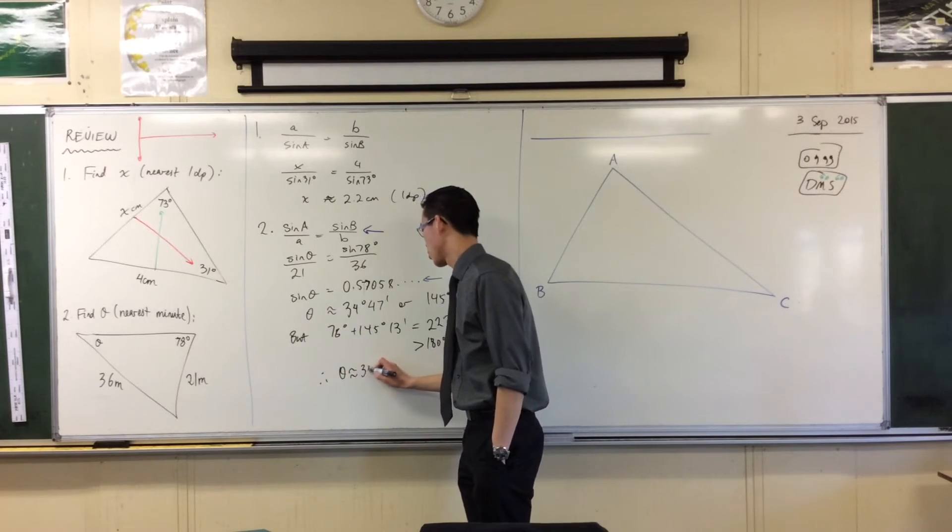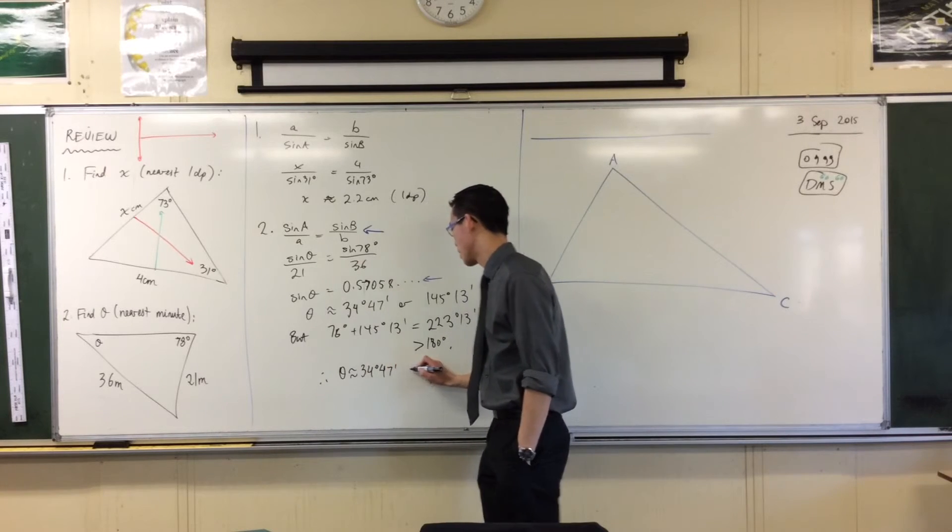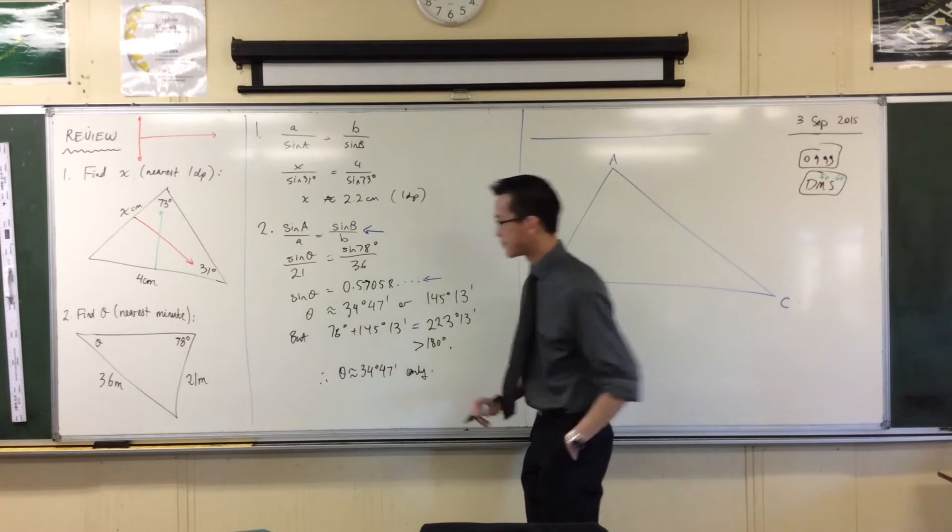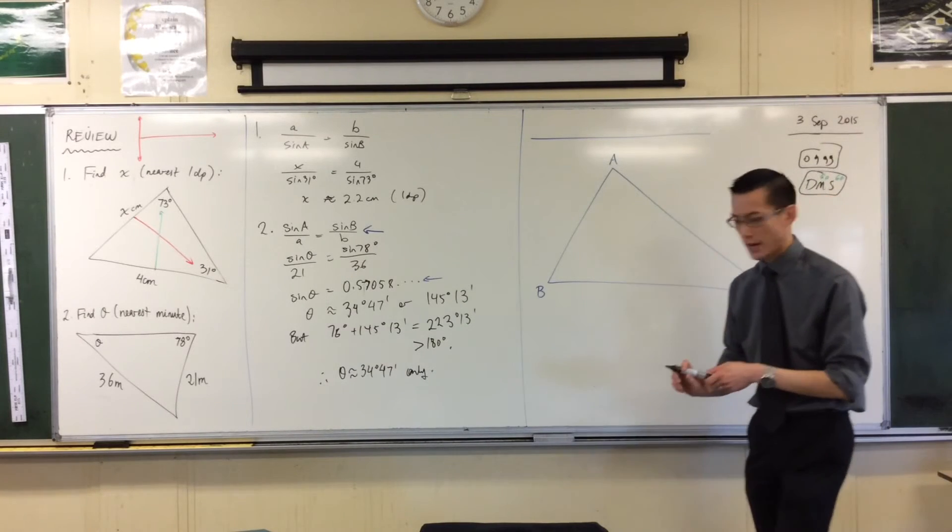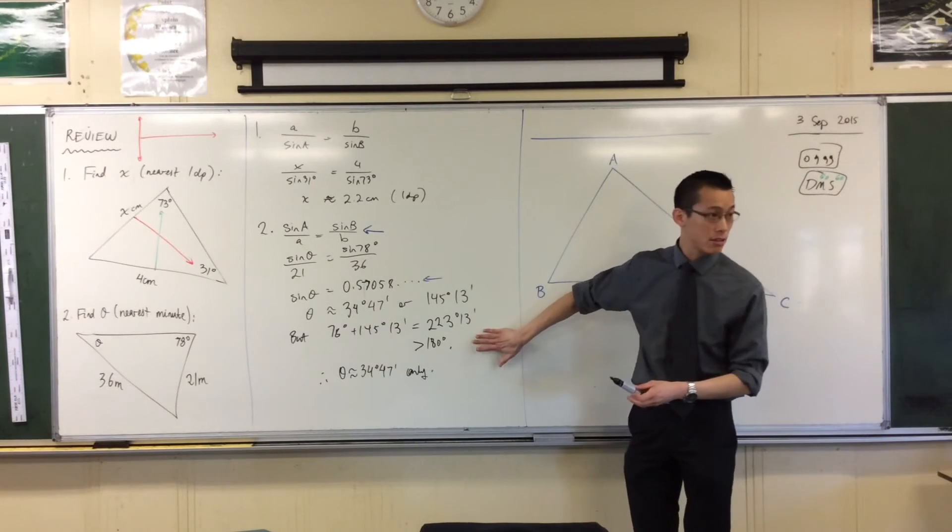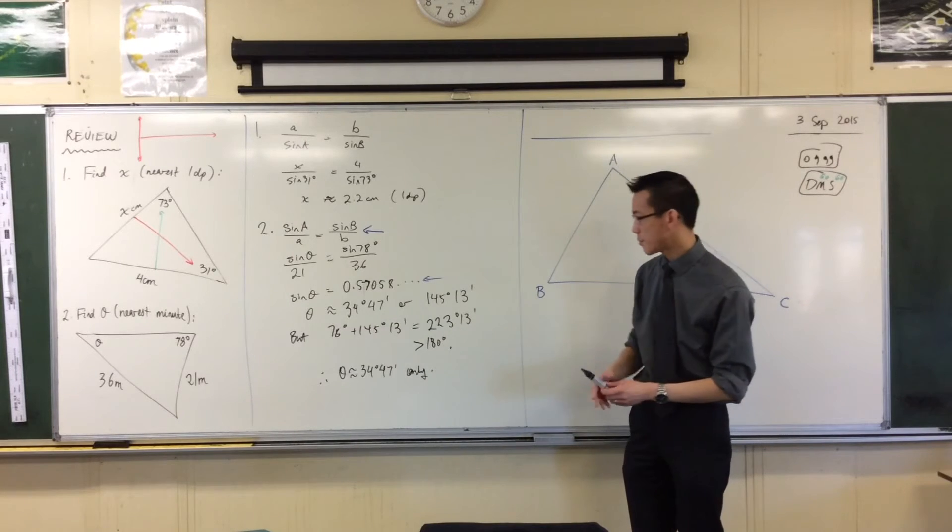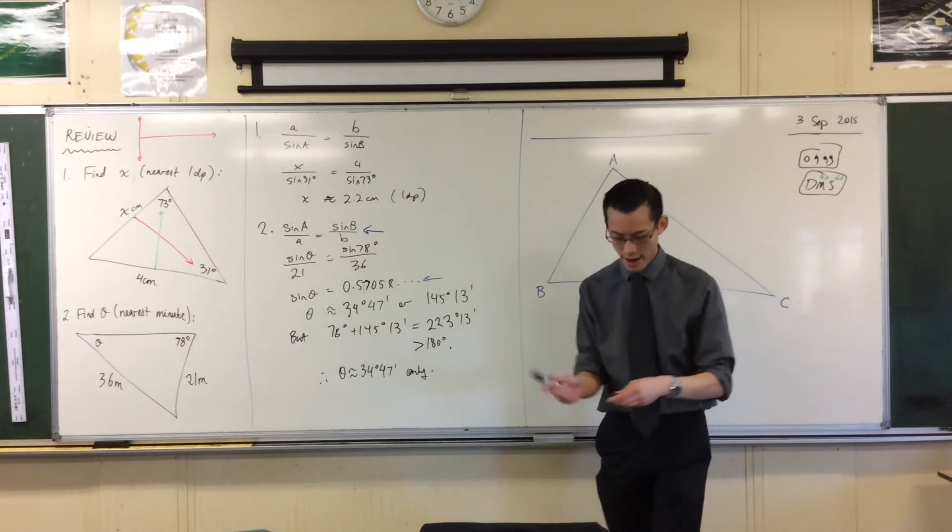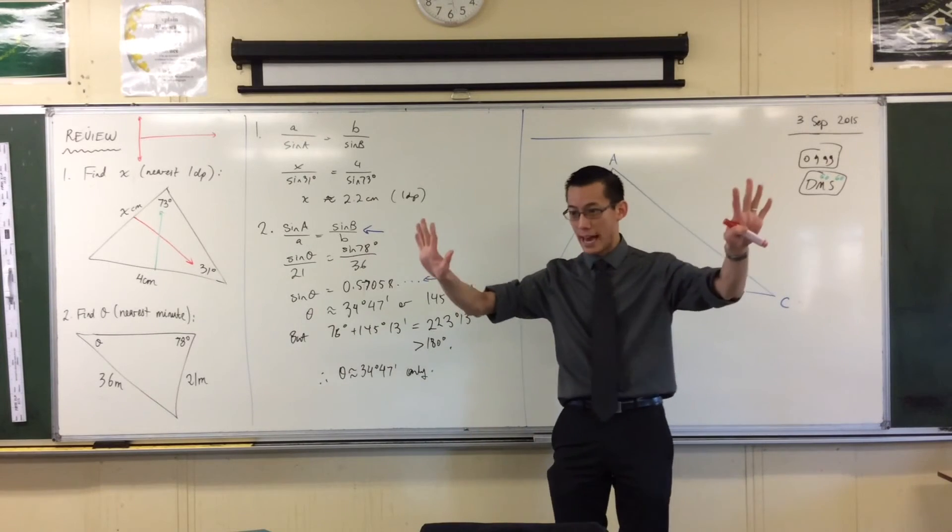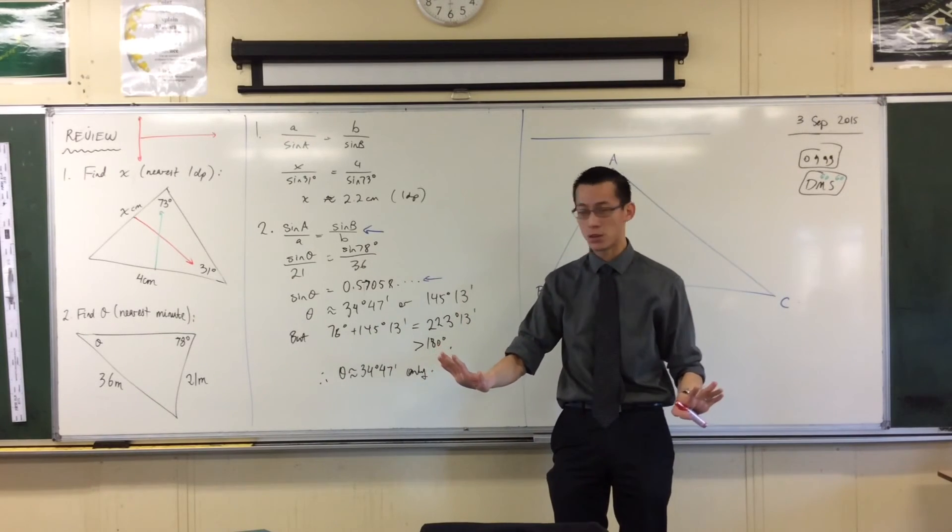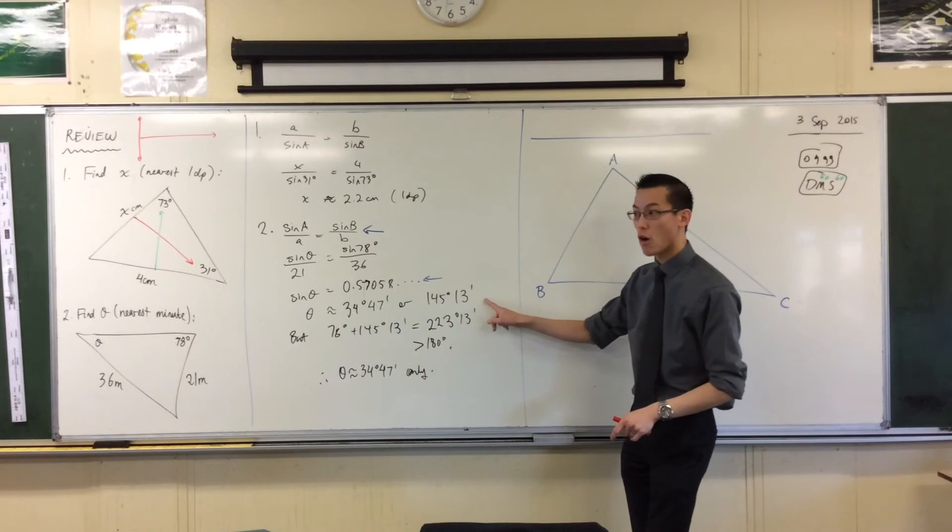Theta is approximately equal to 34 and 47 degrees. Okay? Are you happy with that? There's one more way, by the way. I appealed to the angle sum of a triangle. But there's something else I could have noticed. Okay? Do you remember the whole point of the sine rule is, big sides, big angles. Little sides, little angles.